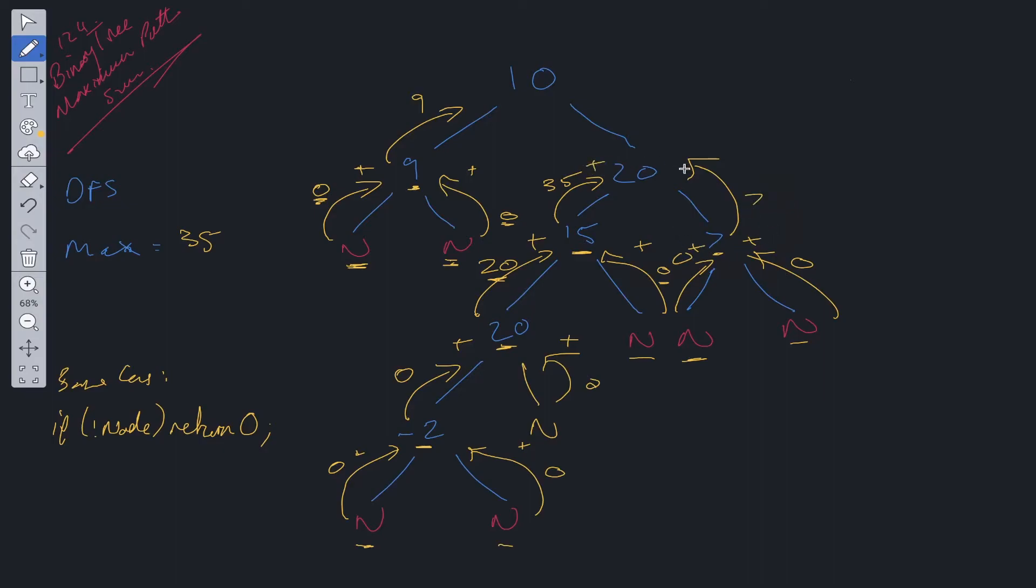Now we have a current max of 35 plus 20 plus 7, which is equal to 55 plus 7, which is equal to 62. So that's greater than 35. So we can update to the max. Now we return up the root value plus the maximum between left and right. So that's going to be 35 plus 20. So we return up 55.